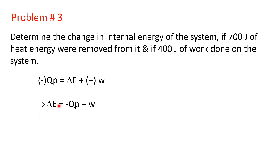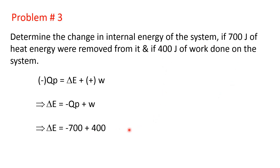So delta E equals minus Qp plus W. Energy is removed, so Qp is 700 joules: minus 700. Work done on the system is 400: plus 400. Therefore, the change in internal energy is minus 300 joules. So the decrease in internal energy is minus 300 joules.